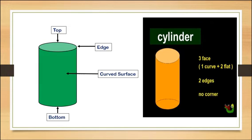The base and top surface of cylinder are the same: flat and circular. The turning surface between them is a curved surface.